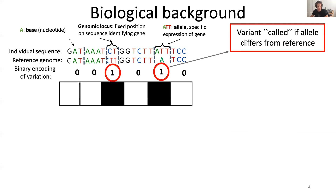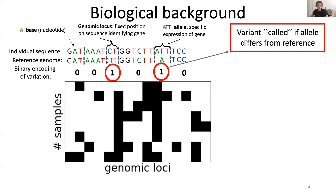We can keep on performing this comparison for every locus to create a map of variation, and we say that a variant is called whenever the allele differs from the reference. We encode this information in a binary vector in which every square represents a locus, and the square is black whenever variation is observed. If we perform this comparison for every observation and every genomic locus, we end up with a sparse binary matrix in which the rows are the individuals and the columns are the genomic loci.